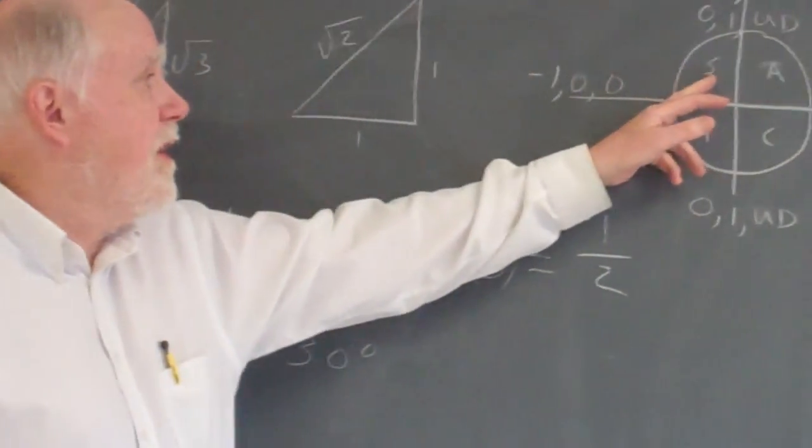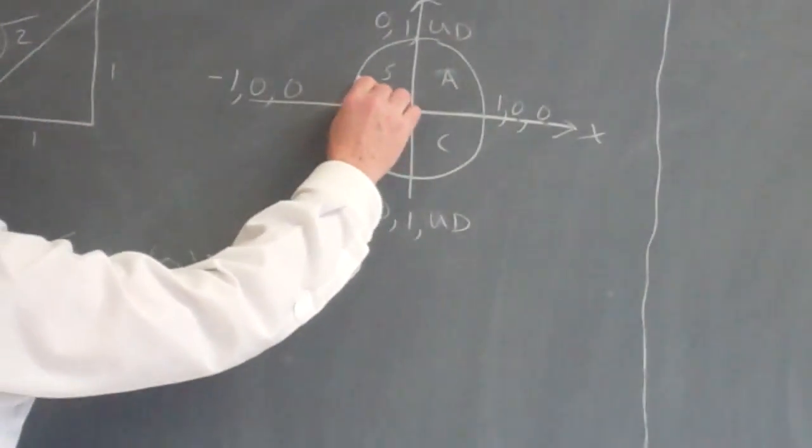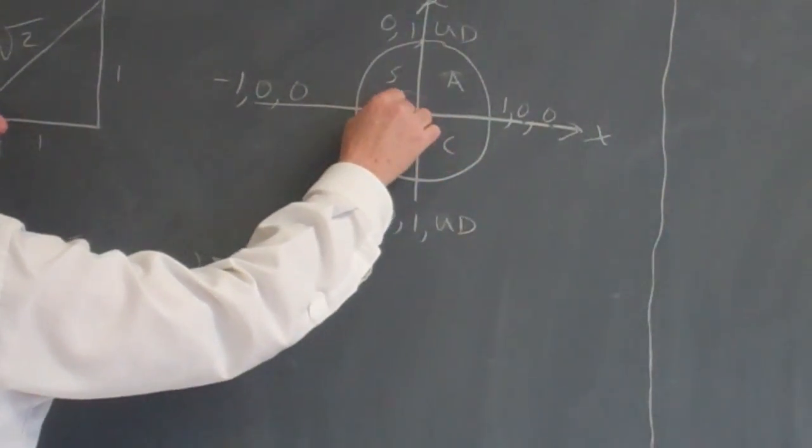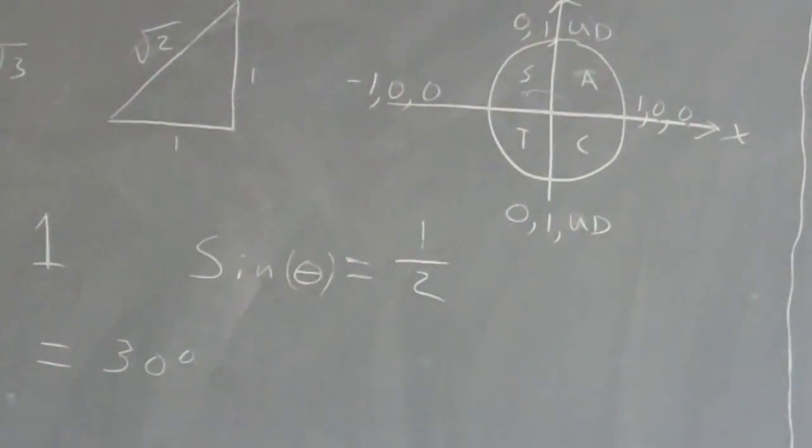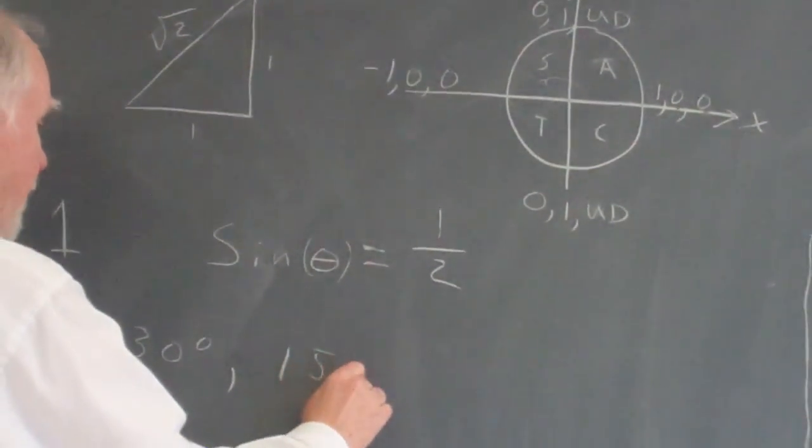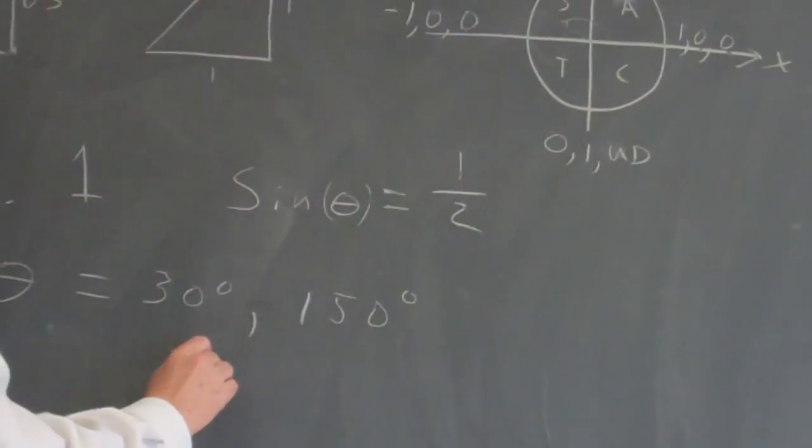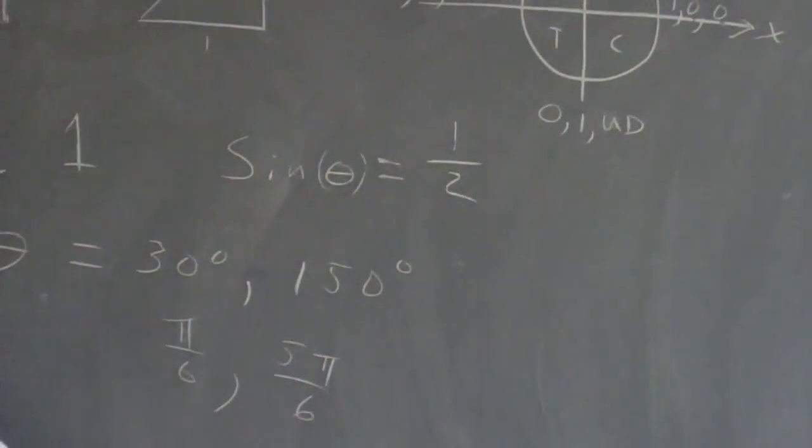Now, the sine is also positive in the second quadrant, so the 30 degree reference angle, that would be this one right here, this angle here. The sine of that angle will also give me 1/2, and of course that's 150 degrees. 150 degrees, and that would be pi over 6 or 5 pi over 6 in terms of radians.